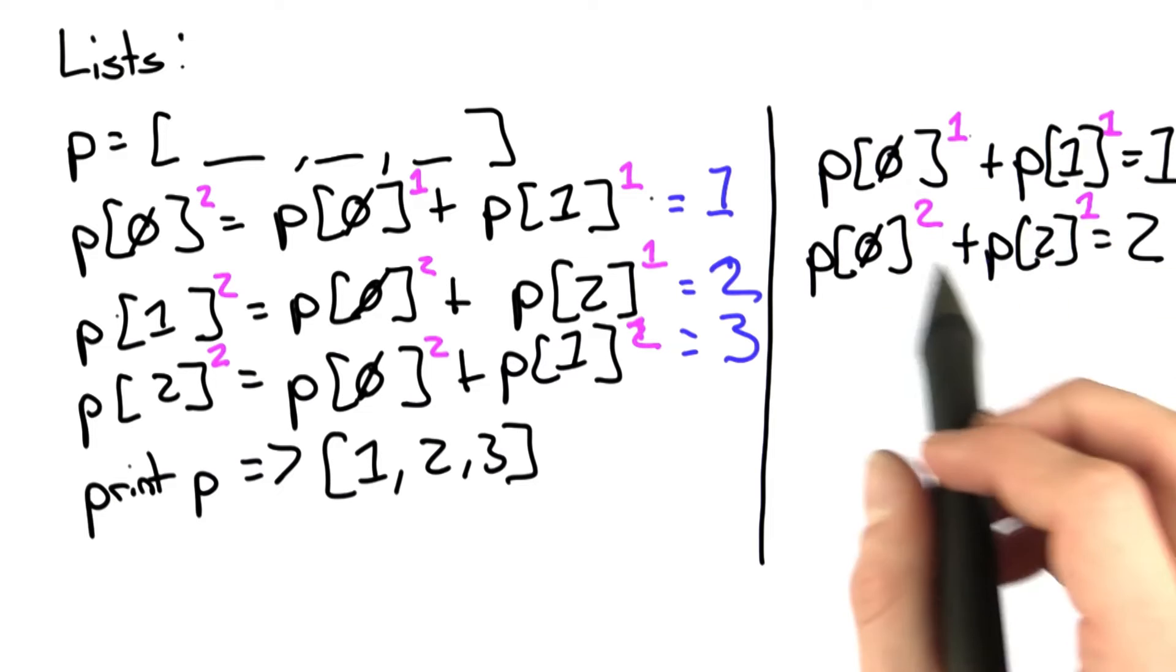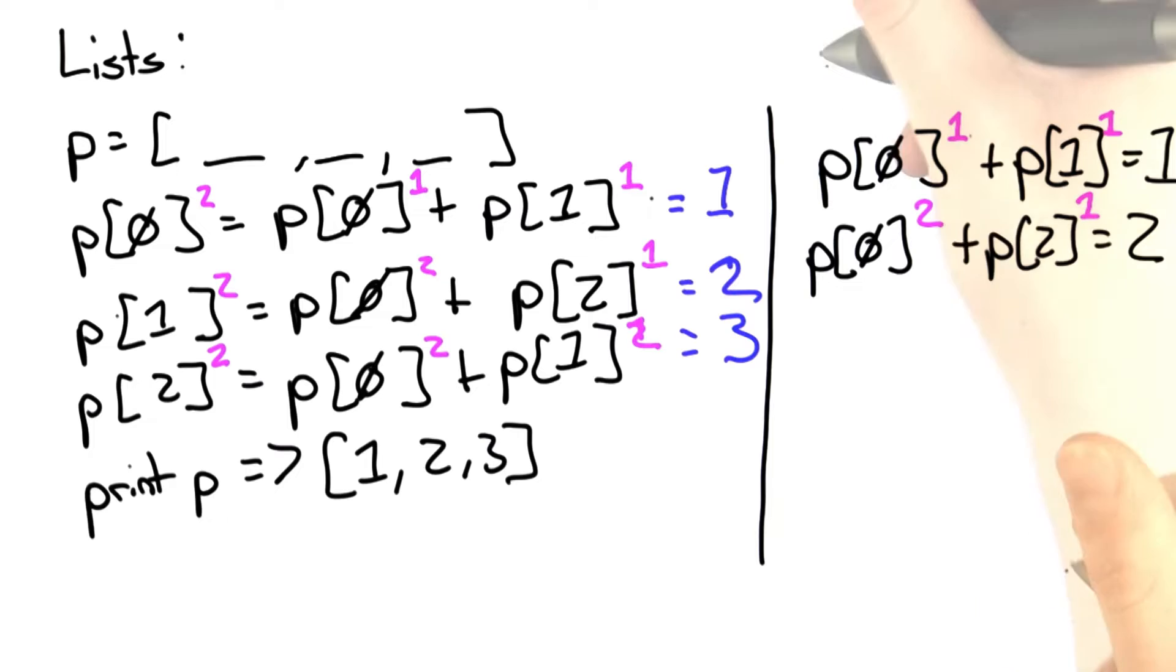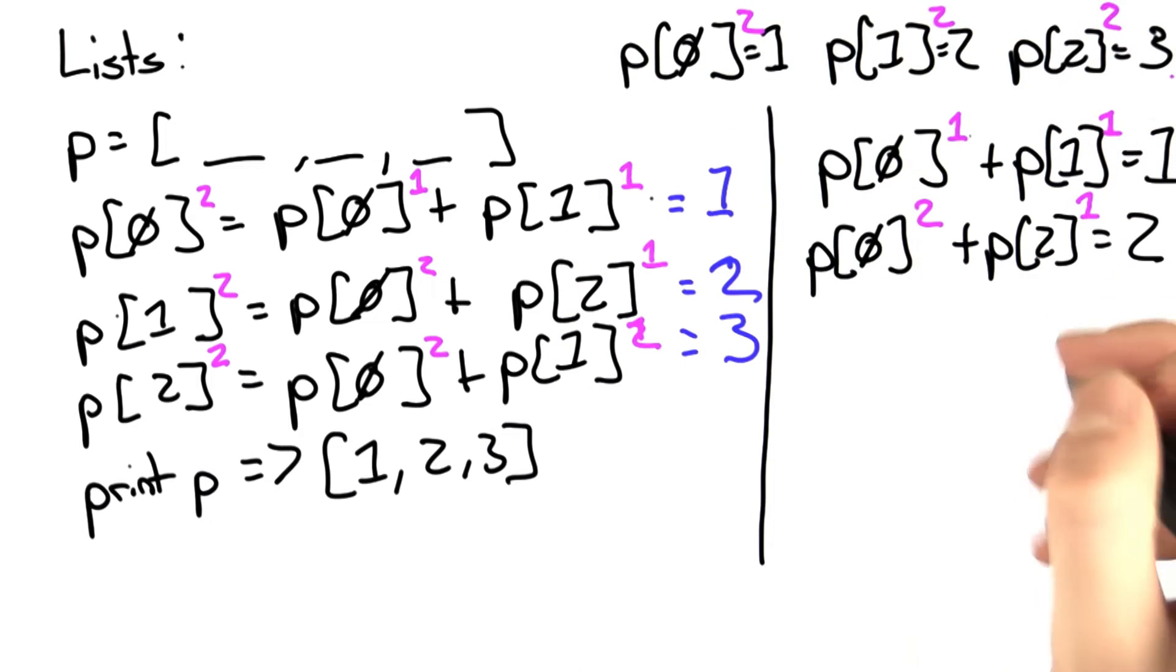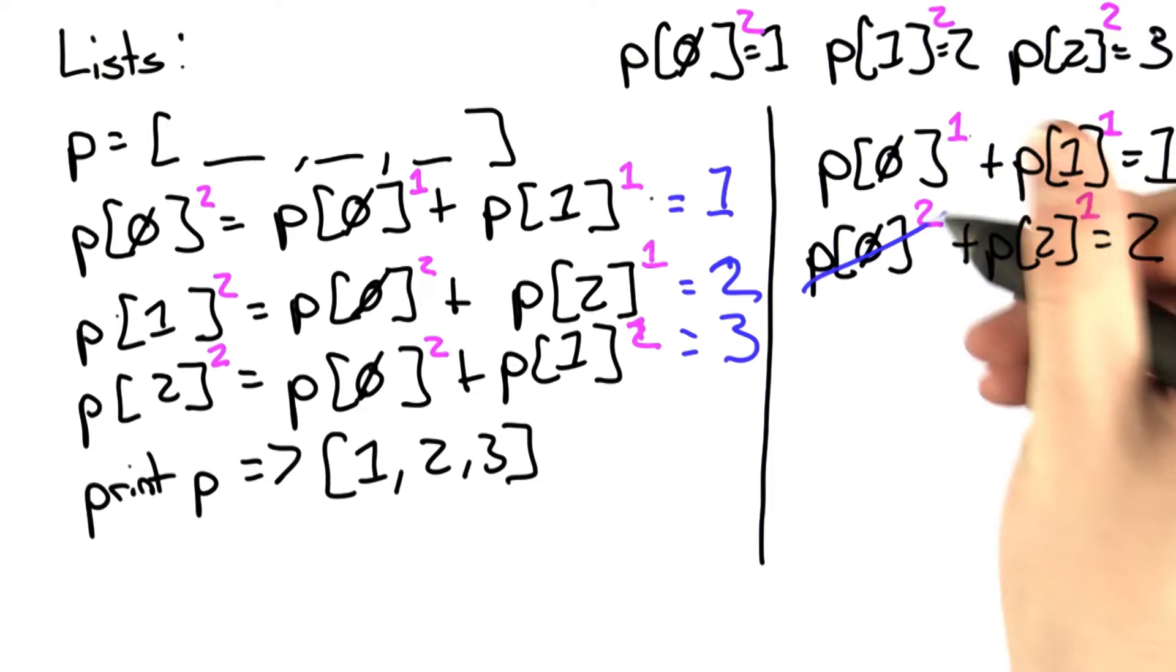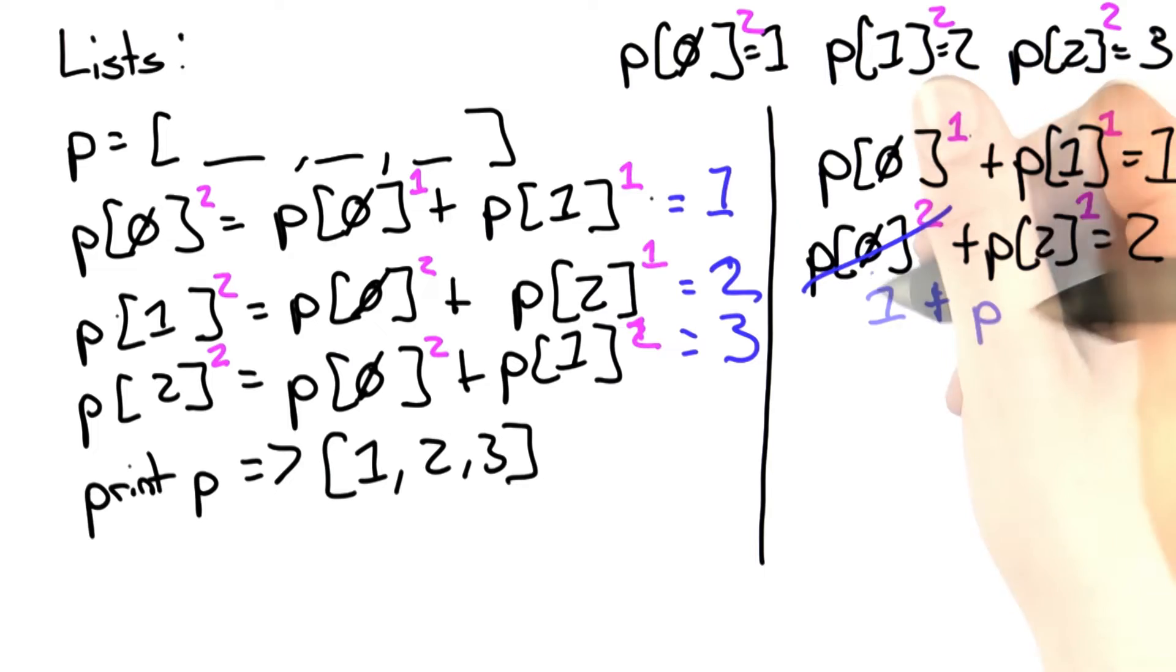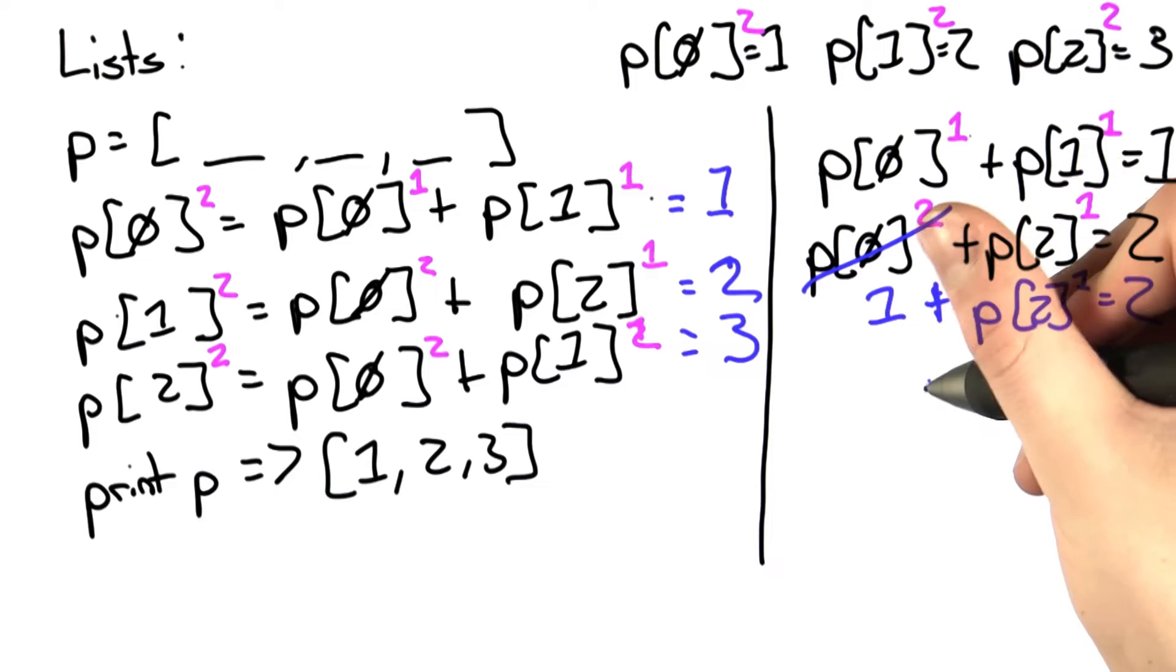So unlike the first equation, we can actually simplify this a little more. Remember that we know the final values of each entry. So we can actually simplify this to just say 1 plus p[2] equals 2. And with a little algebra, we know that p[2] equals 1.